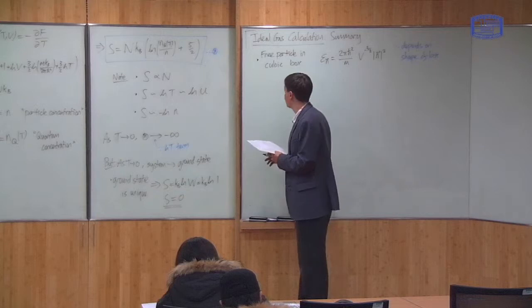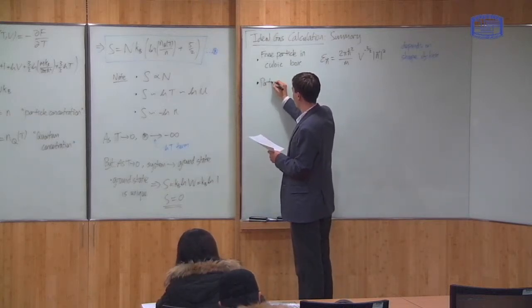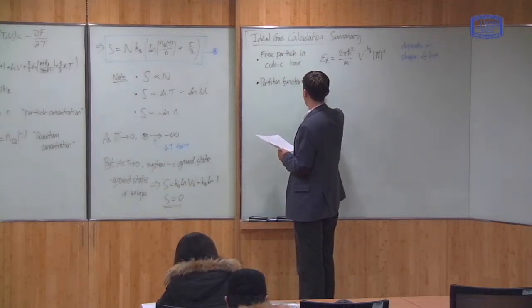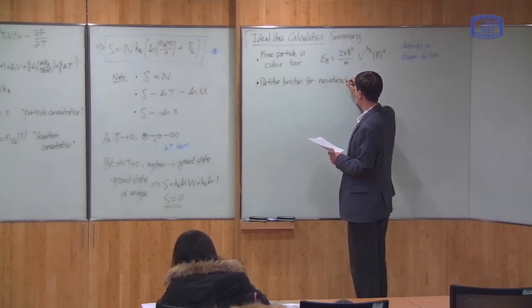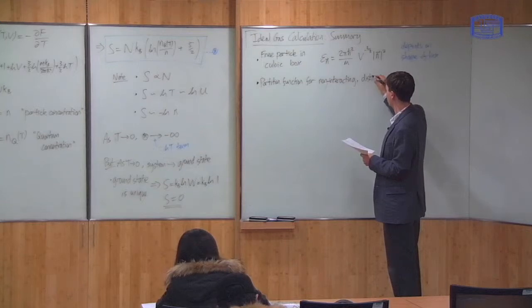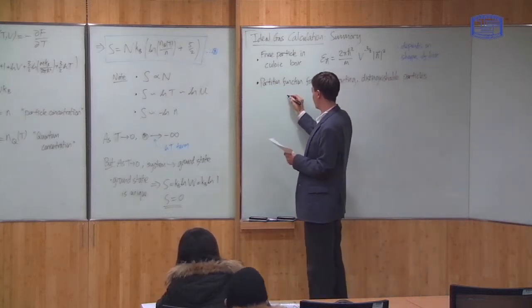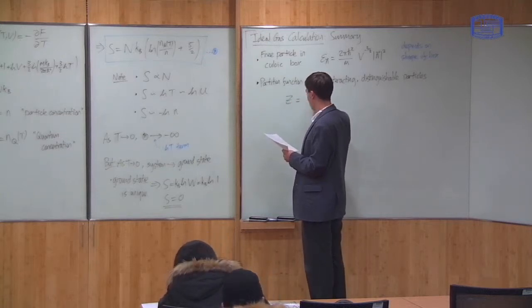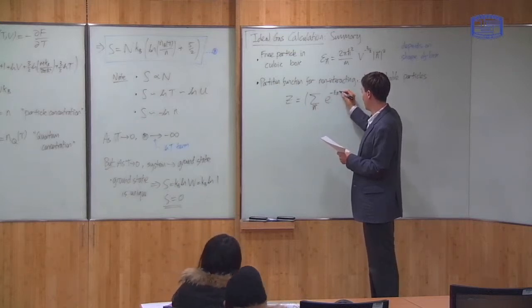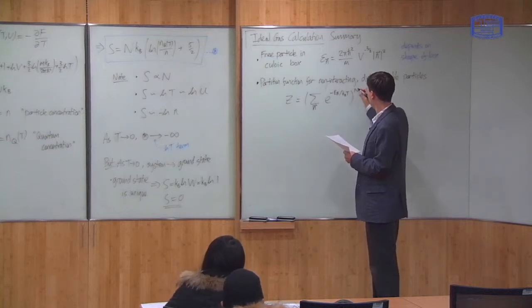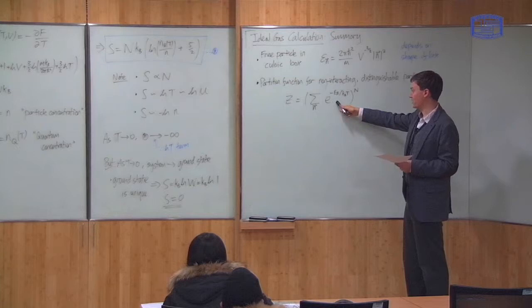That was the first point. The next part was we developed the theory of the canonical partition function, and we said that if the particles are non-interacting and distinguishable, it's quite simple. The partition function for non-interacting and distinguishable particles, this was z is the sum over possible particle states, which are labeled by these vectors n, so the sum over all possible n of e to the minus εₙ over kT to the power n. We proved this result. Particles are non-interacting and distinguishable, you can just sum over the single particle state and take it to the power of n.